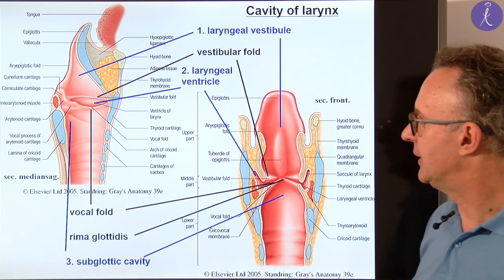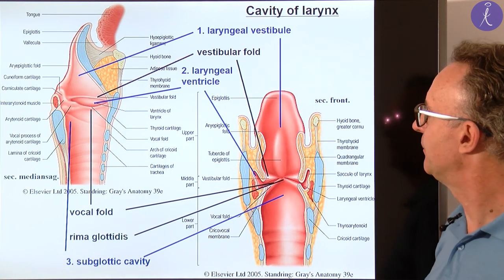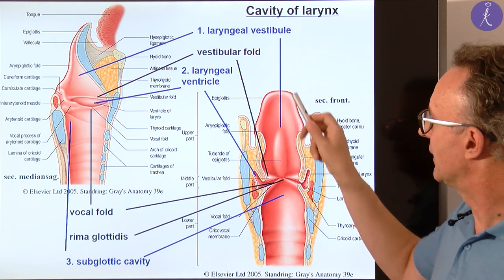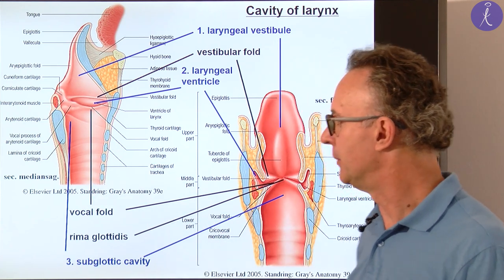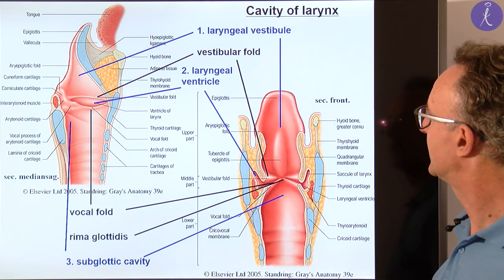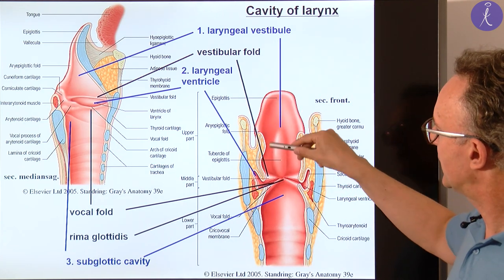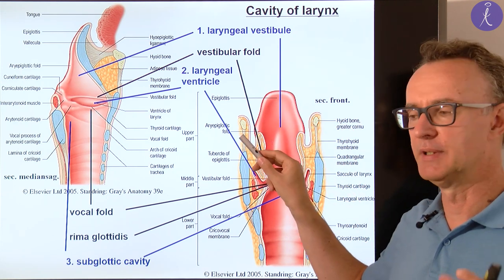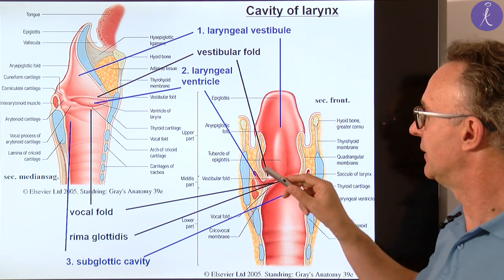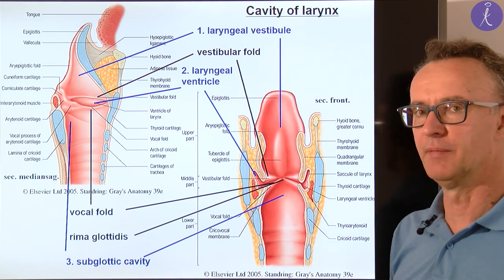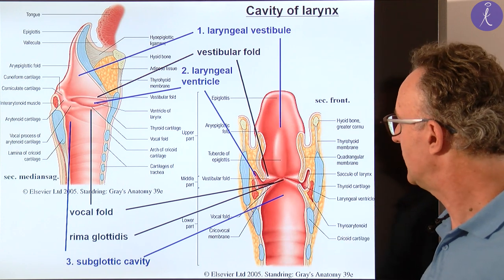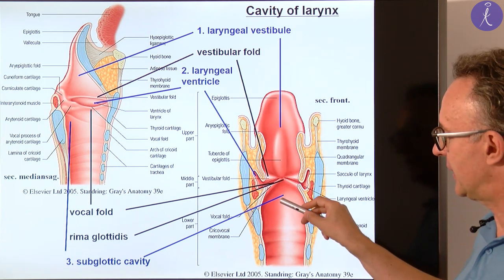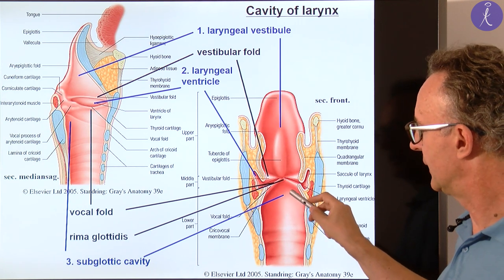This is the laryngeal cavity — a distinct question on the exam. The laryngeal inlet is seen here partly with the epiglottis. This is a frontal cut and this is a mid-sagittal section. The upper part of the cavity is called the vestibule, or laryngeal vestibule. We also studied a vestibule in the nasal cavity and the oral cavity — the first part of cavities is usually called the vestibule. The lower part, where we have a wider region again, is the subglottic cavity.